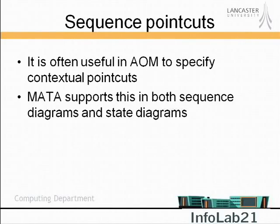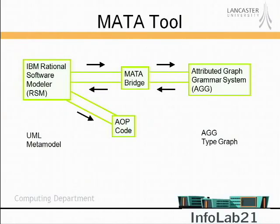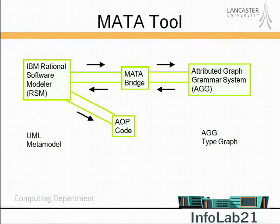That's a quick overview of MATA. The tool uses AGG, a graph rewriting system, as a back end. It can also generate aspect-oriented code from the models — taking each individual model aspect and generating AOP code from it rather than composing everything first. There are interesting research questions here because the modeling language we use is more expressive than existing AOP languages, so there's a question of how to map that down.